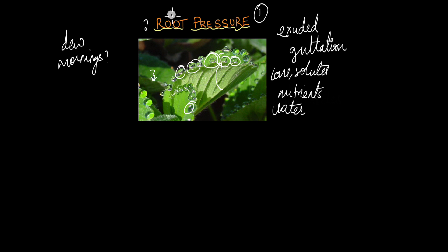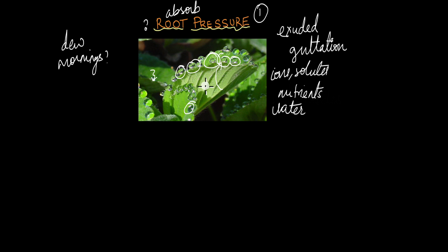Roots are the structures that absorb water and nutrients, and these have to be transported to all parts of the plant against the force of gravity. Root pressure is one among the three methods that explains the transport of these substances to all parts of the plant. How is root pressure generated, and how does this lead to guttation? That's what we will be taking a look at in this video.